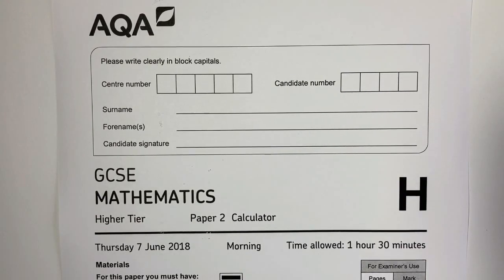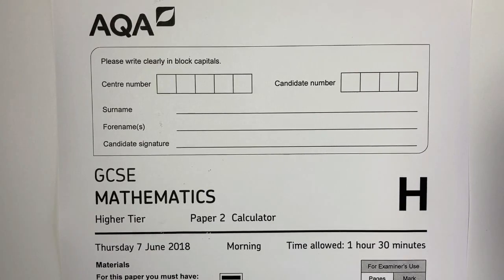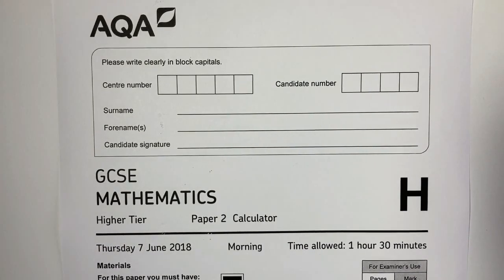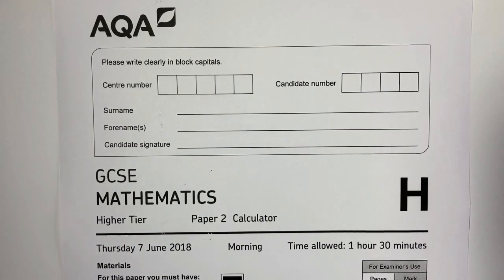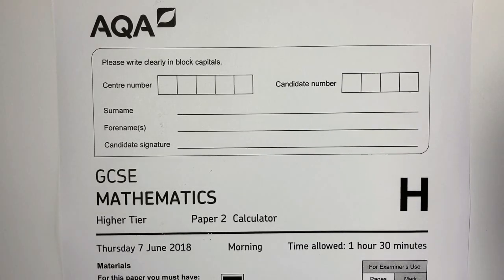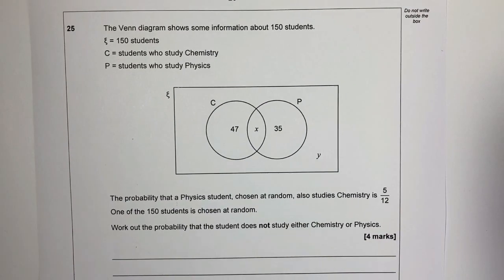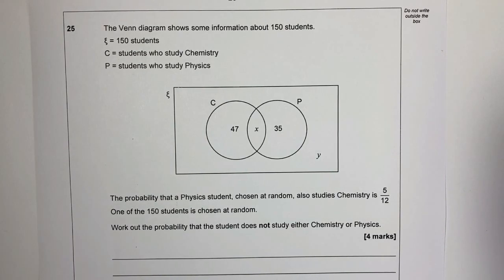Hi, this is the fourth video in the series where we're looking at the AQA Higher Tier Paper 2 from June 2018. In the previous video, we completed through to question number 24. So we're going to start with question number 25, which is a fairly challenging Venn diagram question. Please do have a go at this and then compare your solution.